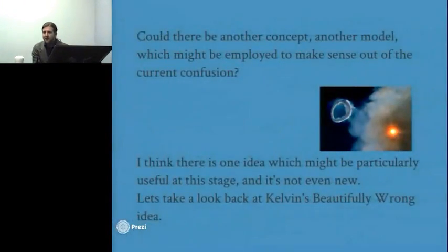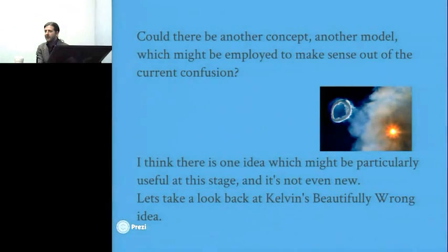So I won't say too much about the standard model exactly. Hopefully anyone who's viewing has taken it on their own time to become familiar with the way in which that describes things. But I guess I'm arguing here that there's some other concept or other model which could be used to make sense out of the stuff that we find in physics experiments. And I think there's an idea which is not new but has been somewhat overlooked, sometimes called Kelvin's Beautifully Wrong Idea.